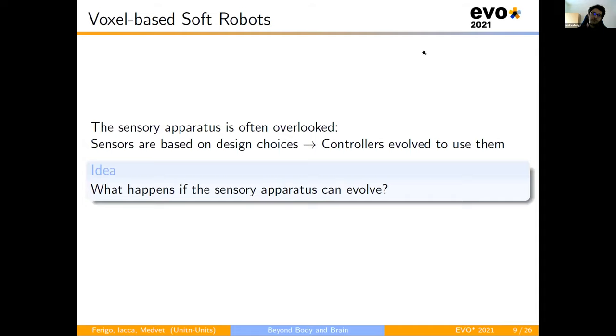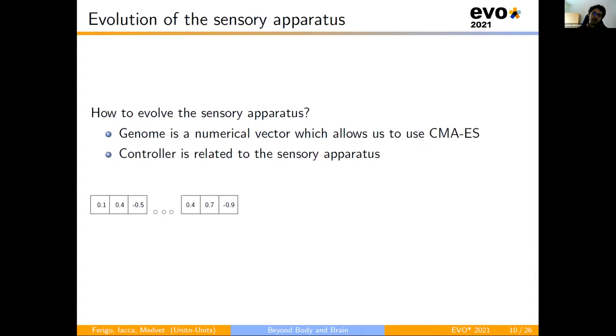So, of these three components, the sensory apparatus is the one that is often overlooked. The sensors are based on design choices, and the controller is simply evolved to use them. But what happens if the sensory apparatus can evolve? However, before answering this question, we need to answer another question, which is how to evolve the sensory apparatus.